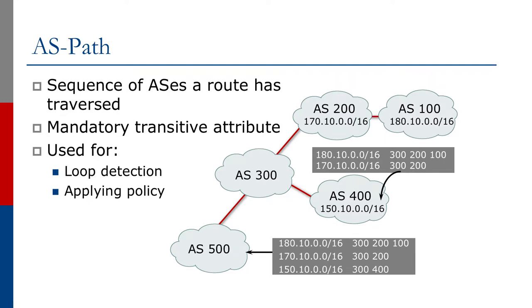The first attribute we will look at is the AS path, which is simply the sequence of autonomous systems a route has traversed. It's a little bit like your airline baggage tag but in reverse. Normally when you check in at the airport you get a baggage tag listing the airports your suitcase will transit. With the AS path, it lists the autonomous systems this route has traversed to reach you.